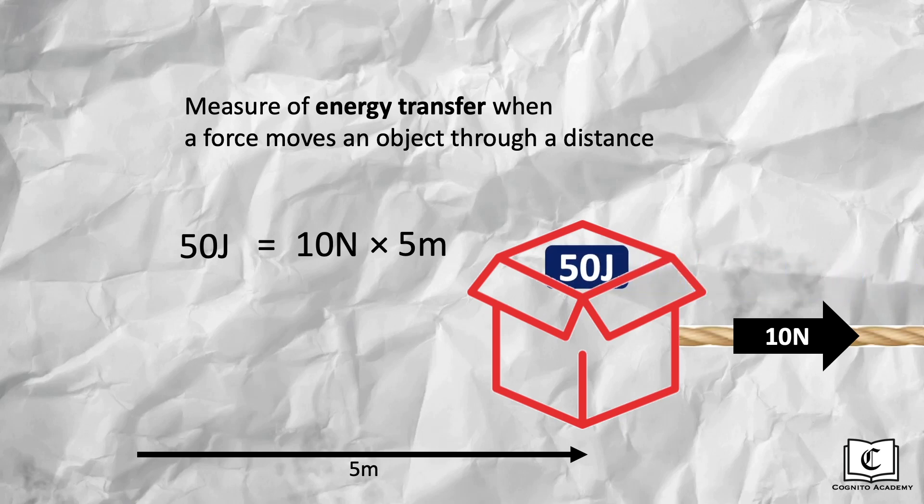That means 50 joules of energy was actually transferred from the string to the box. But have you ever wondered, what happens to all this energy that the box has gained? It causes the box to gain speed, increasing its kinetic energy. Basically speaking, in this frictionless scenario, the work done equals the gain in kinetic energy for the box.